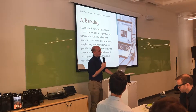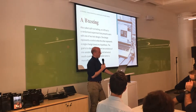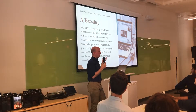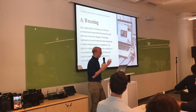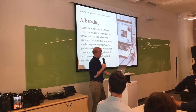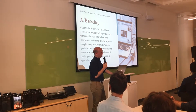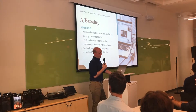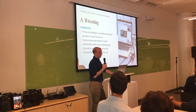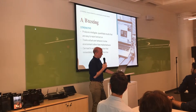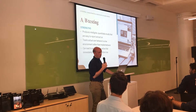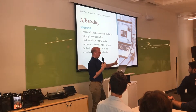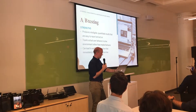Next is A/B testing, also called split-run testing. An A/B test is randomized and serves one of two options to the user - one is the control, one is the test, and basically one or the other ends up winning. It compares two variations of a single variable and produces actual measurable quantitative results, versus the others before which were more on the qualitative side of things. It also tracks actual user behavior in a live environment rather than implied behavior - a lot of the other ones have people implying they might do something, whereas this gives you real results.